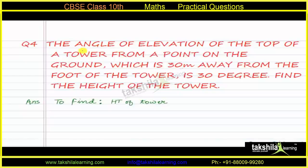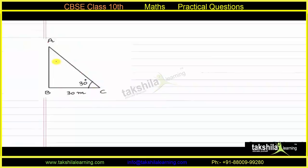Question number 4: The angle of elevation of the top of a tower from a point on the ground, which is 30 meters away from the foot of the tower, is 30 degrees. Find the height of the tower. Let us understand the question with the help of a figure. AB is the tower, and at point C, which is 30 meters from the foot of the tower, the angle of elevation of the top is 30 degrees.